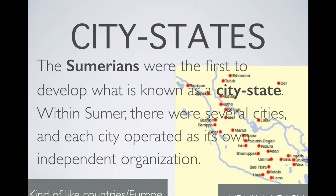Sumer had what we call city-states, which is an interesting concept because they're very different from cities today like Paris, New York, or San Francisco. These cities were essentially countries themselves — each ran on its own with its own leader, its own rules, its own laws, and there was no overarching Sumerian government. They would sometimes go to war with each other as well.